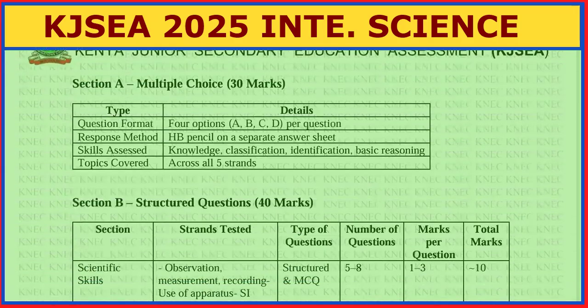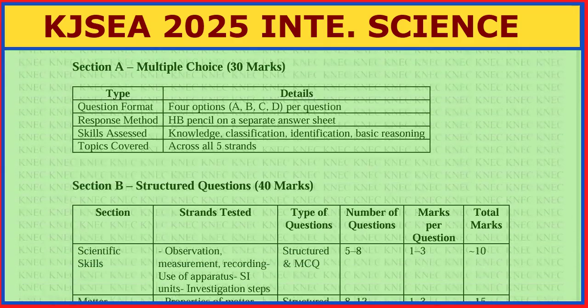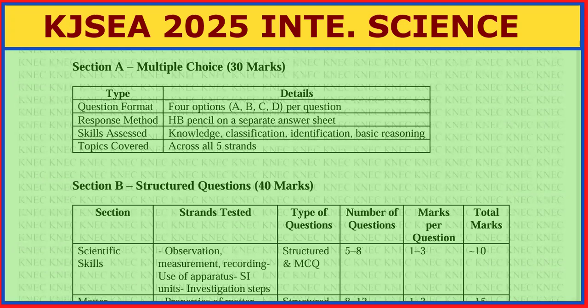Here is the breakdown for Paper One, Section A: the multiple choice questions. Question format is four options — A, B, C, D — per question. Response method is HB pencil on a separate answer sheet. Skills assessed include knowledge, scientific classification, identification, basic reasoning, and topics covered span across all five strands.